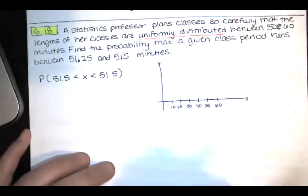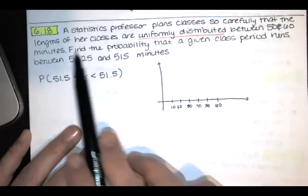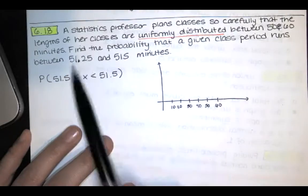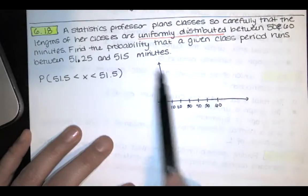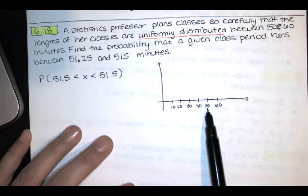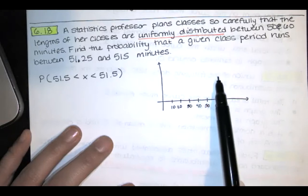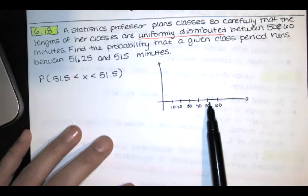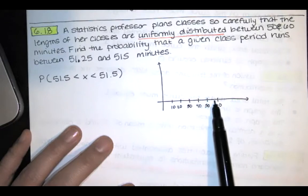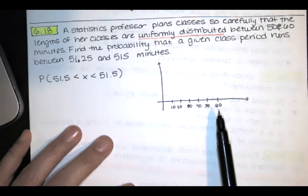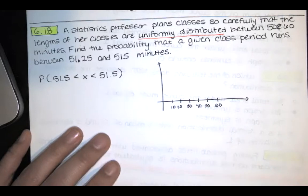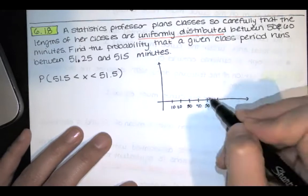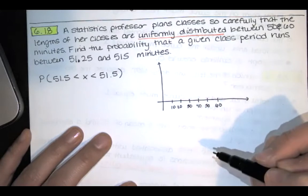All that means is that it's equally likely that that class period, the length of the class would end at any time between that 50 minute mark and that 60 minute mark. So that class could end at 51 minutes or 52 minutes or 52.5 minutes. Any value in between 50 or 60 minutes would be fine.